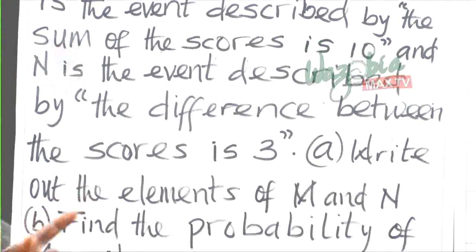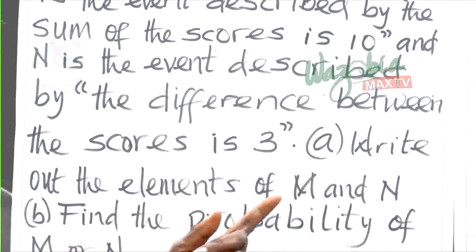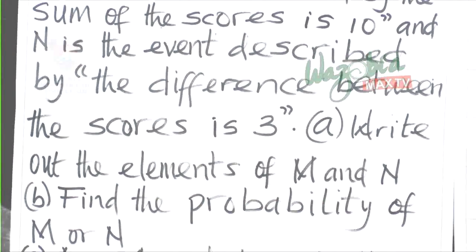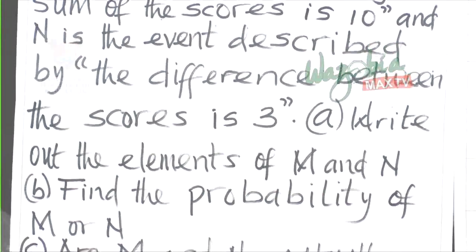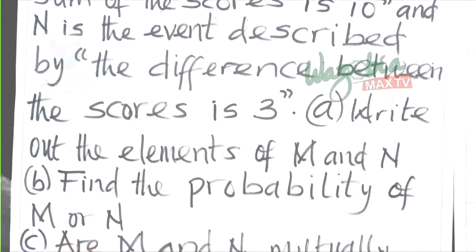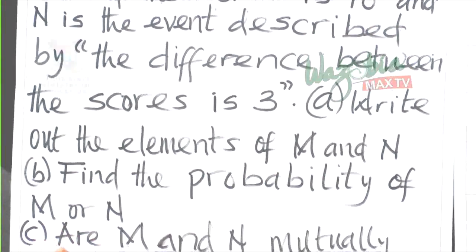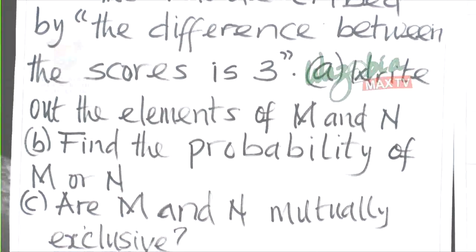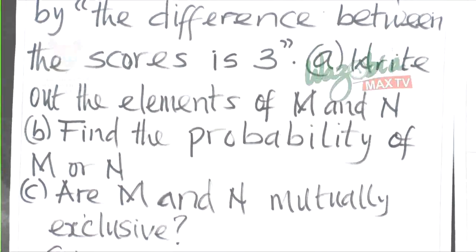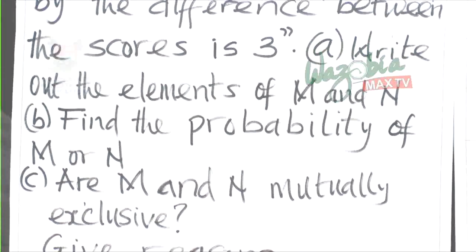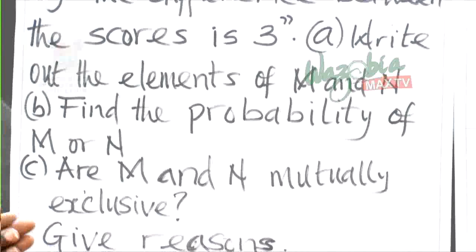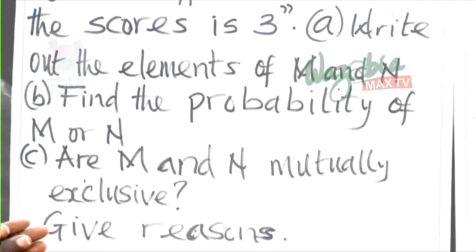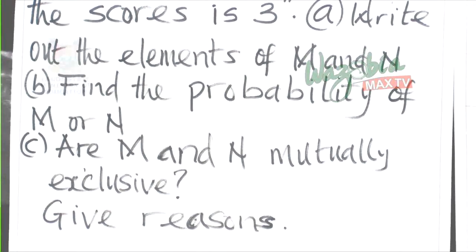The questions are: (a) write out the elements of M and N; (b) find the probability of M or N; and (c) are M and N mutually exclusive? Give your reasons.